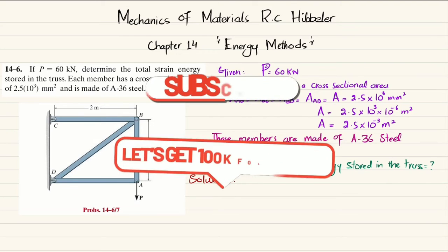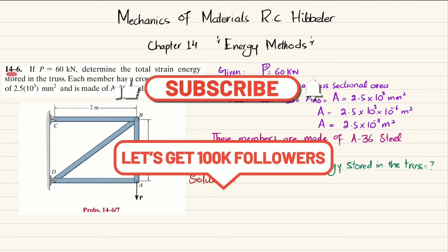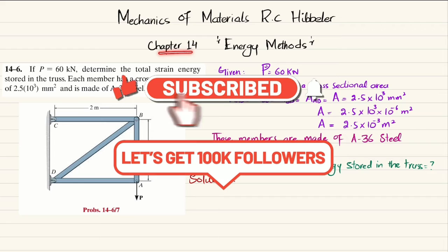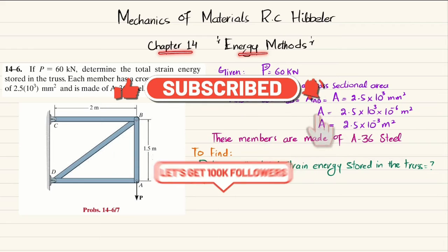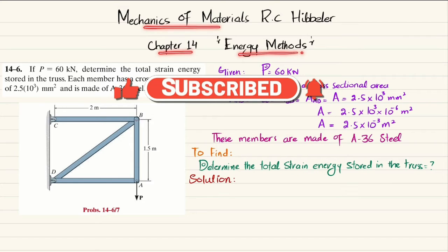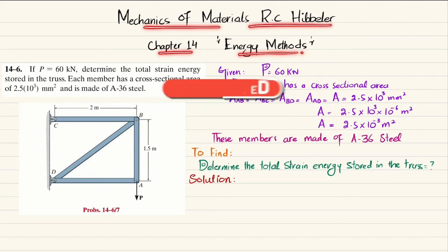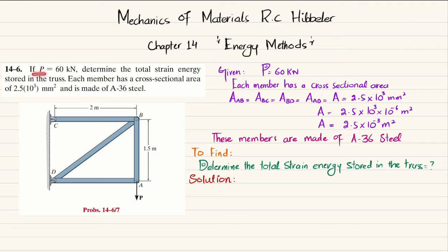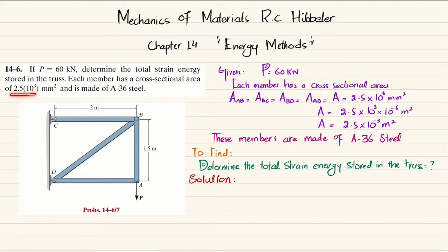Welcome back. Problem 14-6, taken from chapter 14 'Energy Methods' in the book 'Mechanics of Materials' by R.C. Hibbeler. The statement is: P = 60 kilonewtons. Determine the total strain energy stored in the truss. Each member has a cross-sectional area of 2.5 × 10⁻³ square meters and is made of A36 steel.